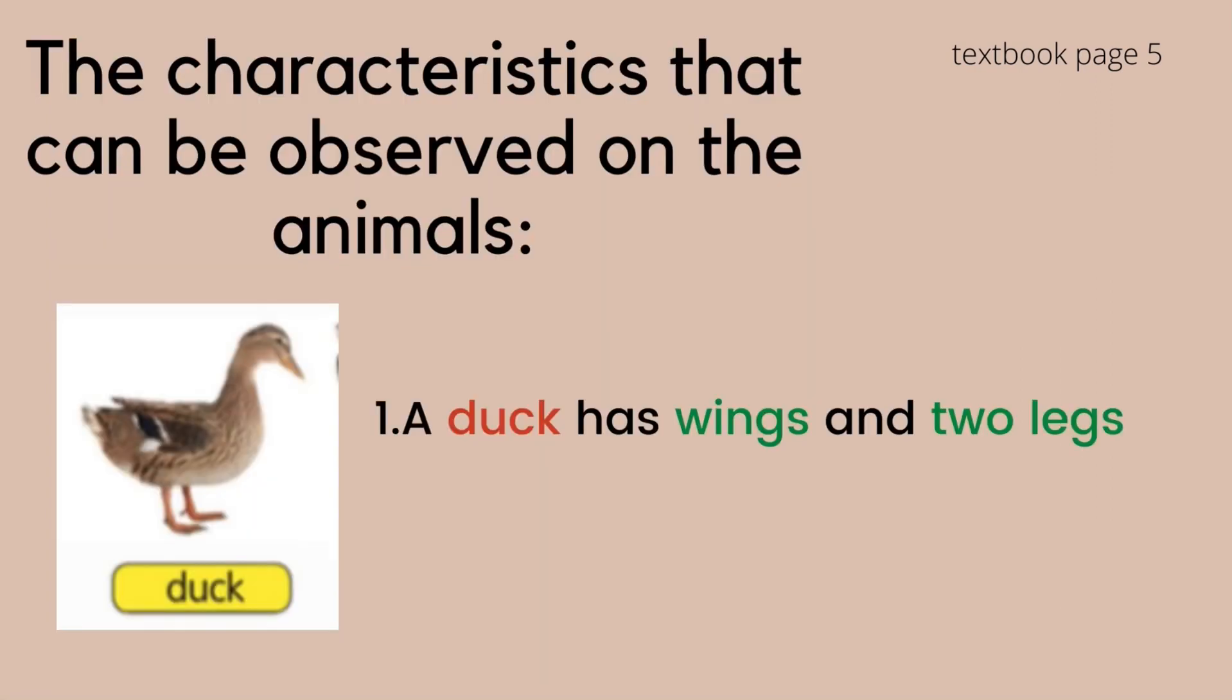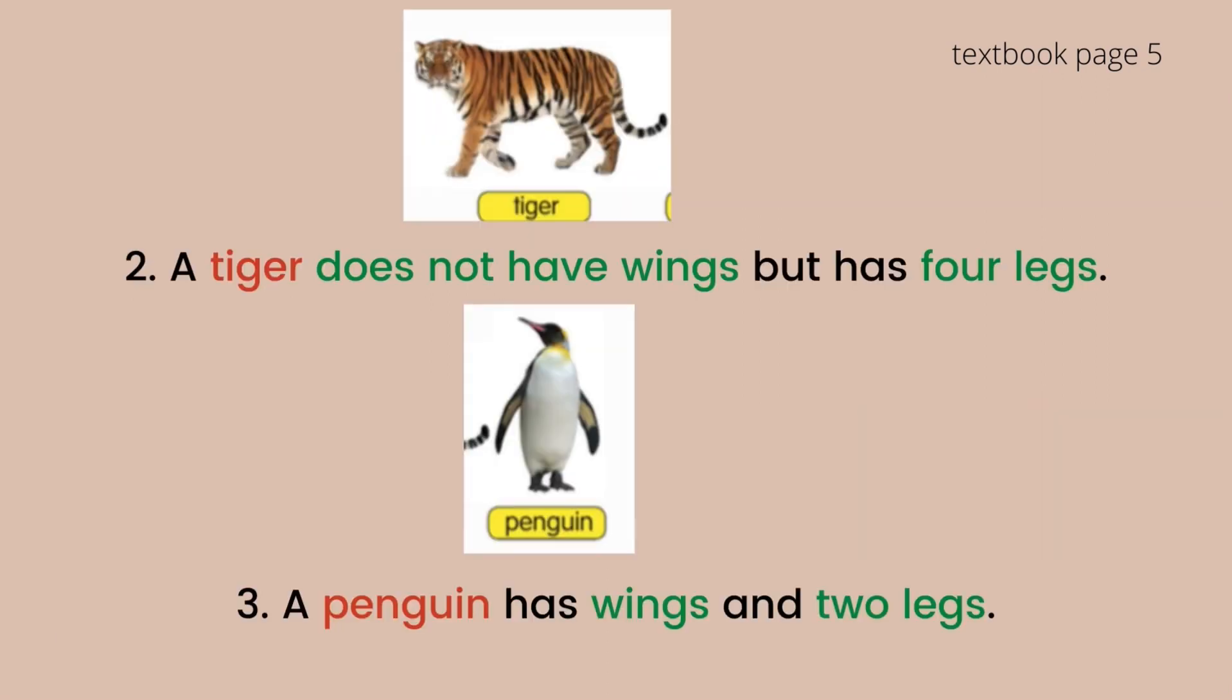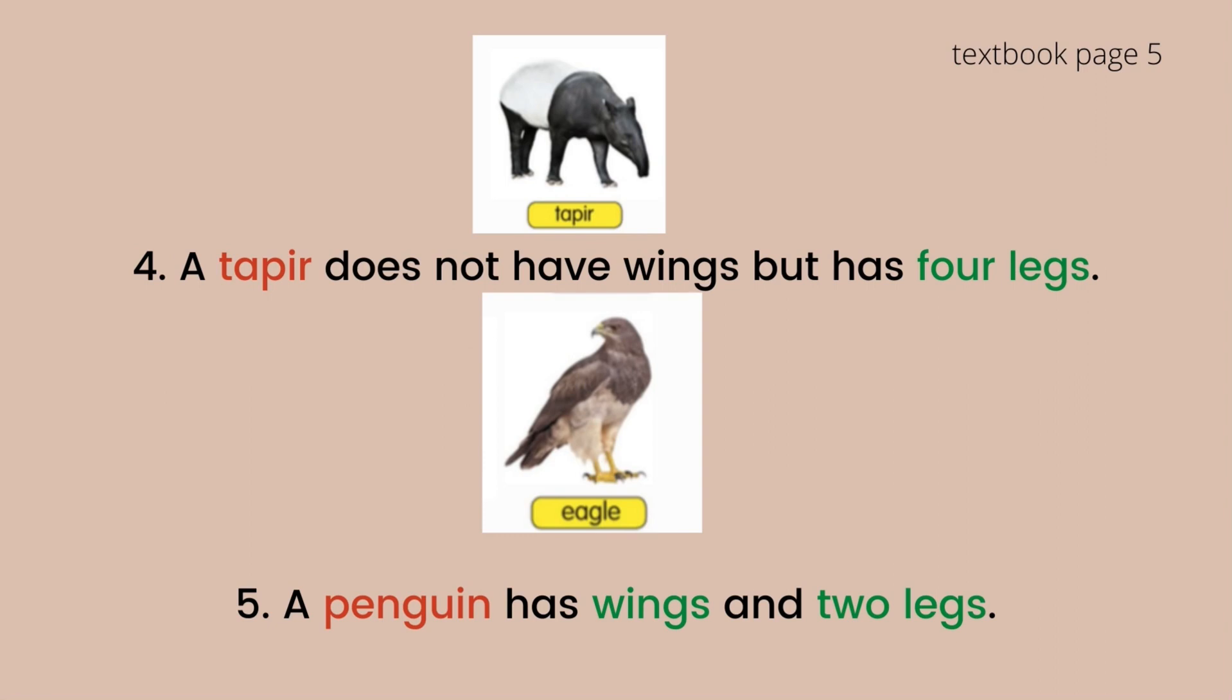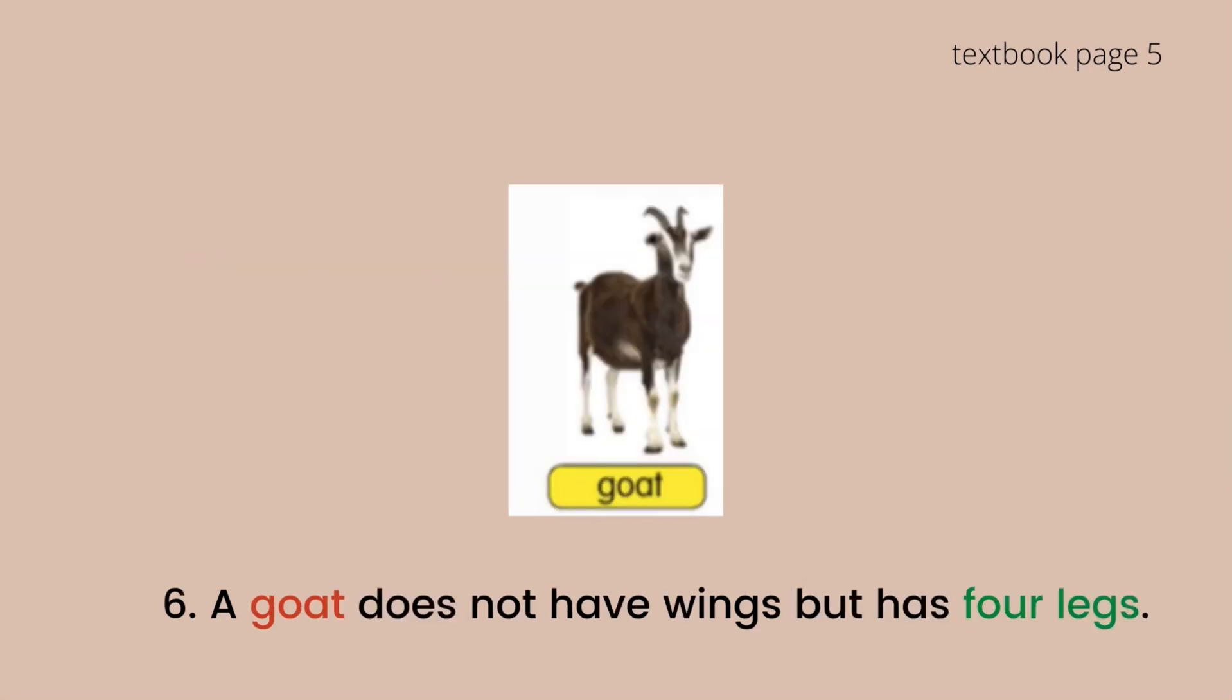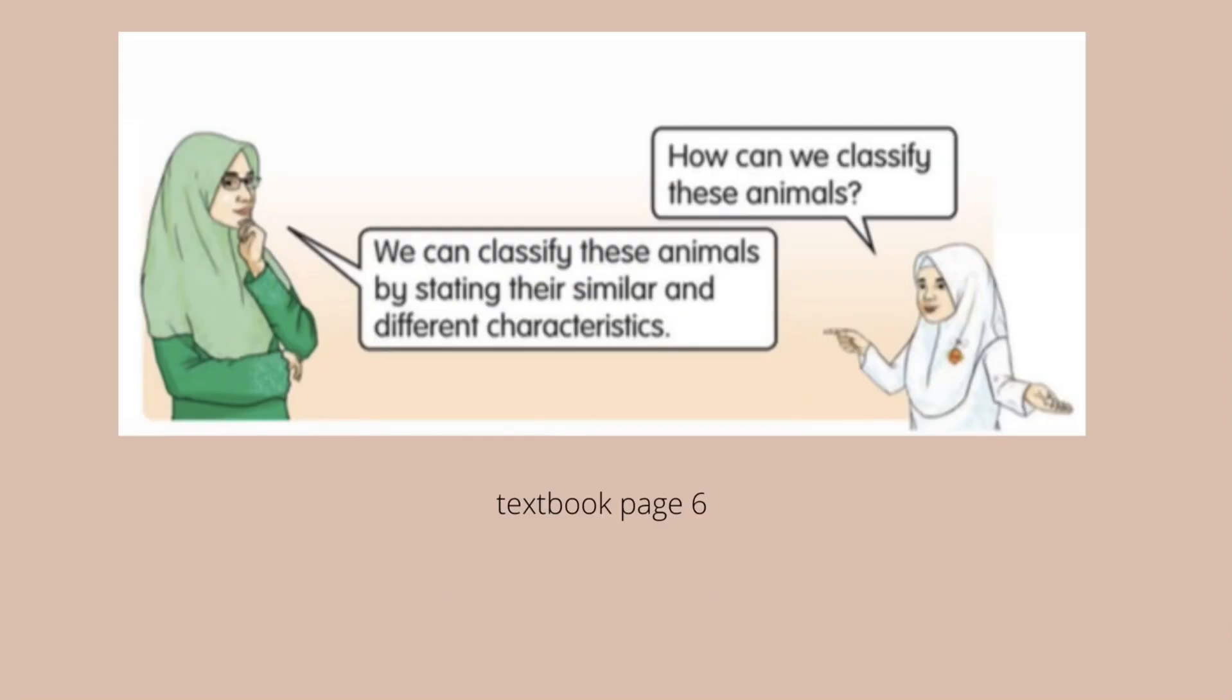Now look at the picture. The characteristic that can be observed on the animals - for example, a duck has wings and two legs. A tiger does not have wings but has four legs. A penguin has wings and two legs. A tapir does not have wings but has four legs. An eagle has wings and two legs, and a goat does not have wings but has four legs. We can classify these animals by stating their similar and different characteristics.